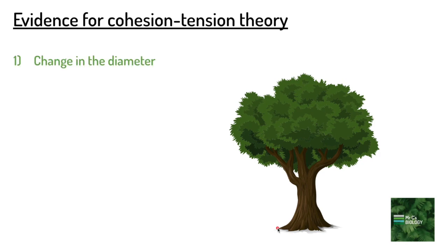The first piece of evidence is that a tree changes the diameter of its trunk throughout the day as the rate of transpiration changes. As transpiration increases when it's light, hot, dry, and windy, the diameter of the tree decreases during the day when these conditions are common.